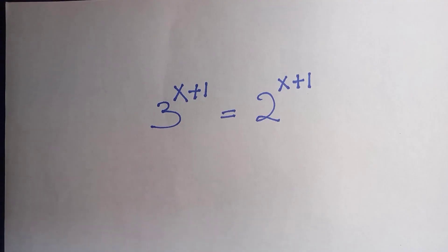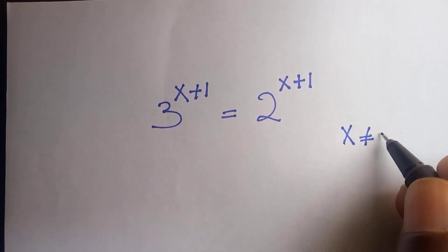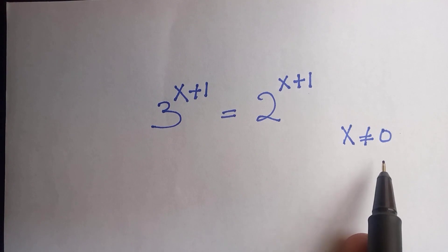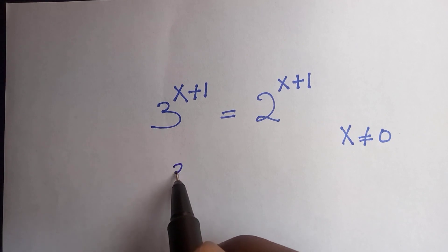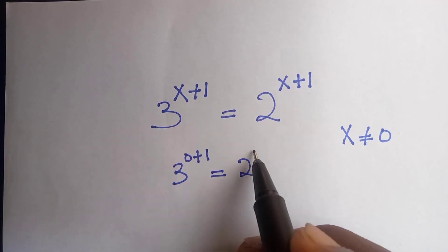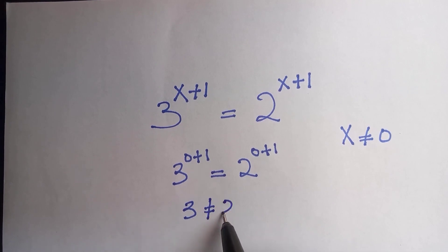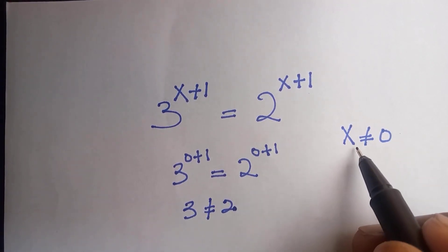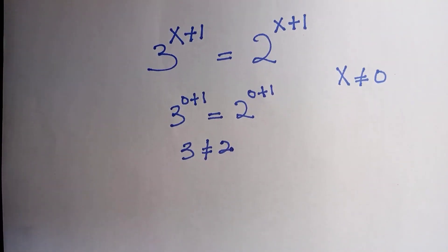What should come to mind first is that x is not equal to zero. If x is not equal to zero, we are good to go to obtain the satisfying value of x. Let's check why x is not equal to zero. Suppose we have 3 raised to the power of zero plus one equals 2 raised to the power of zero plus one — that gives 3 raised to the power one equals 2 raised to the power one, which is not equal. So x equals zero does not satisfy this equation.